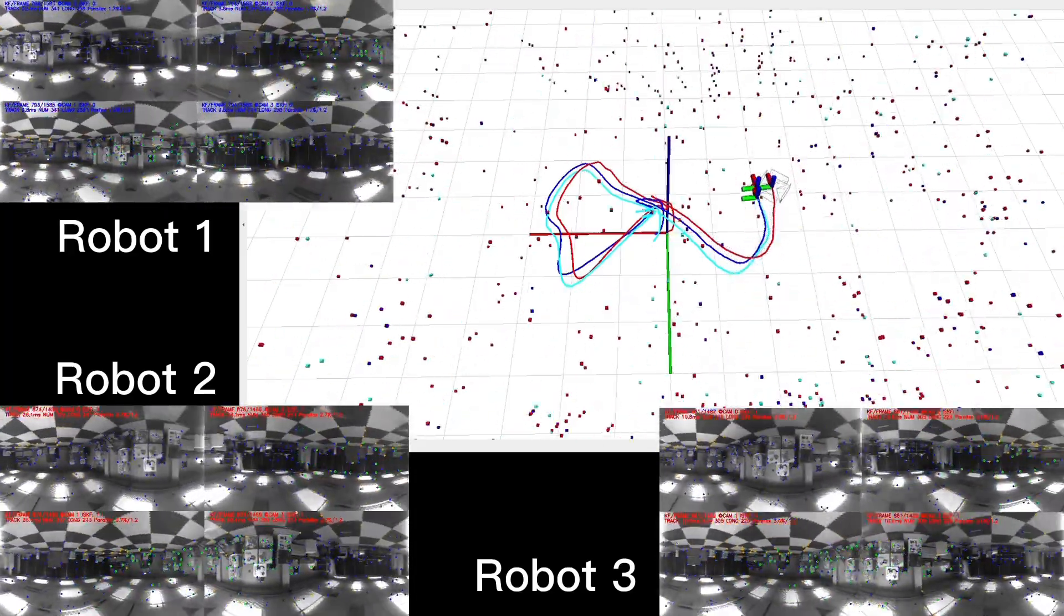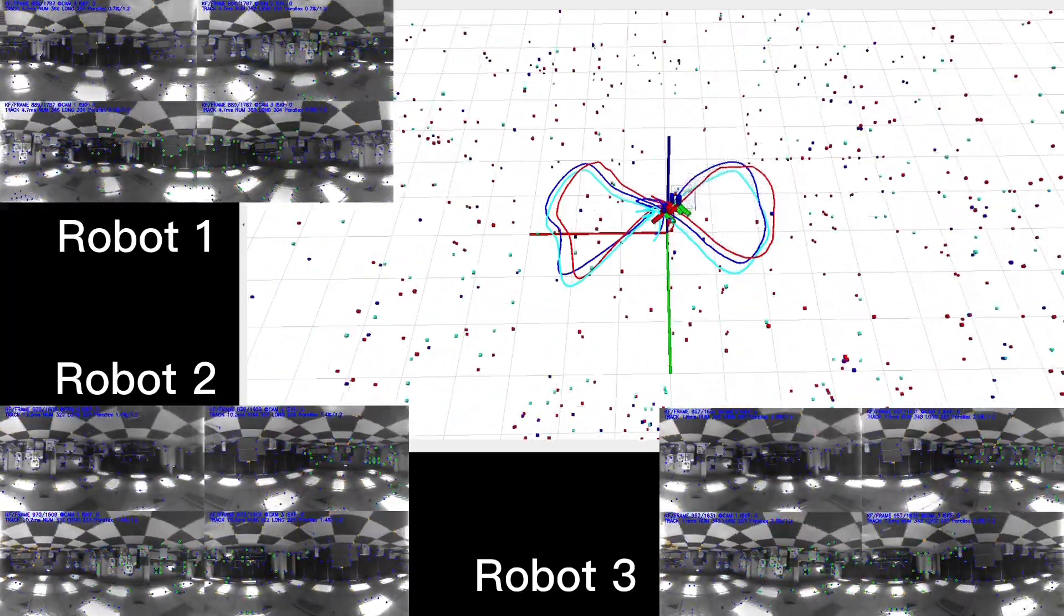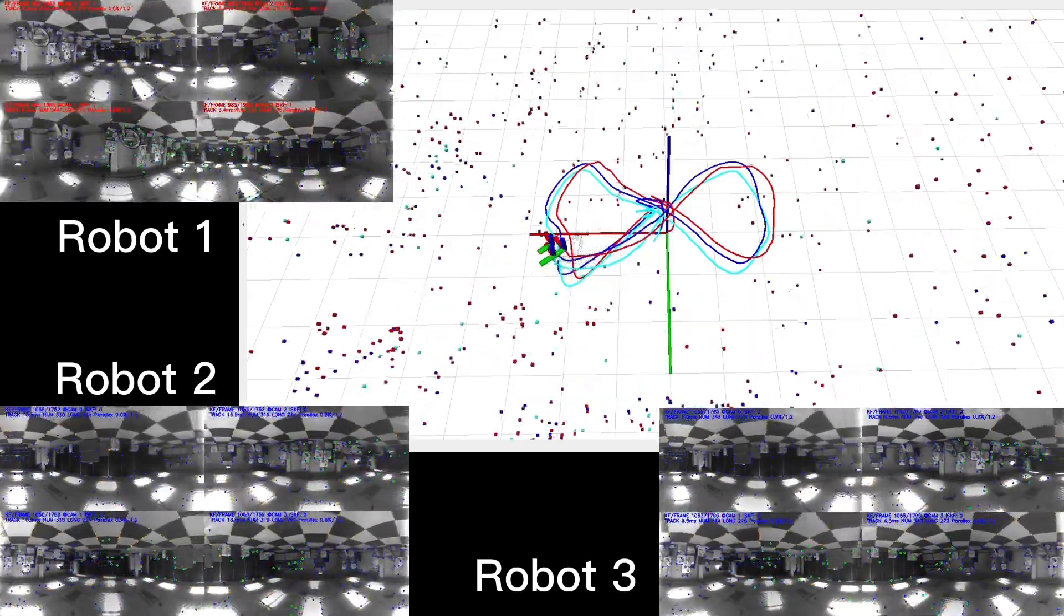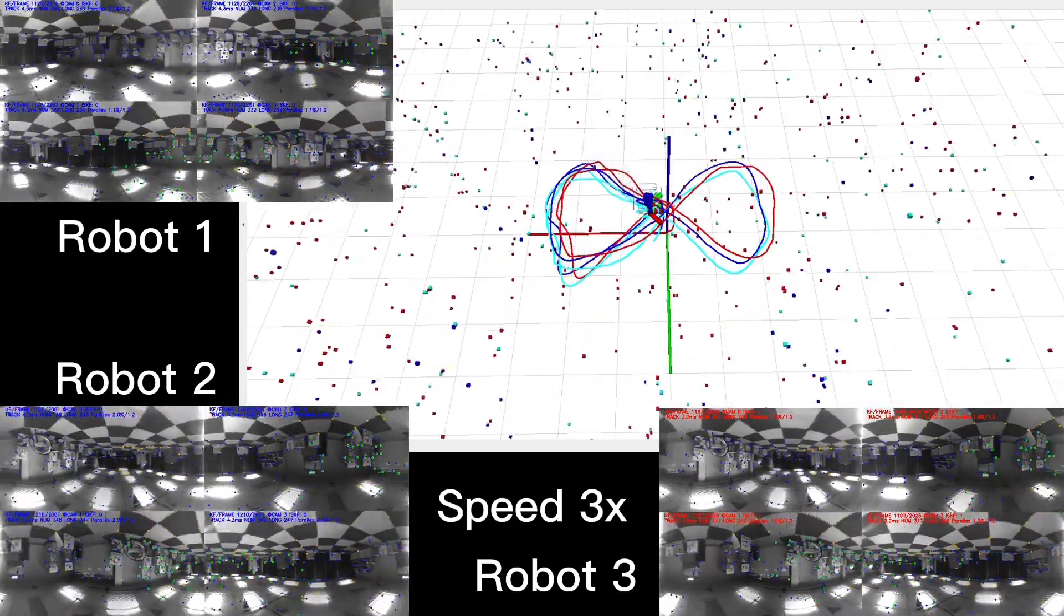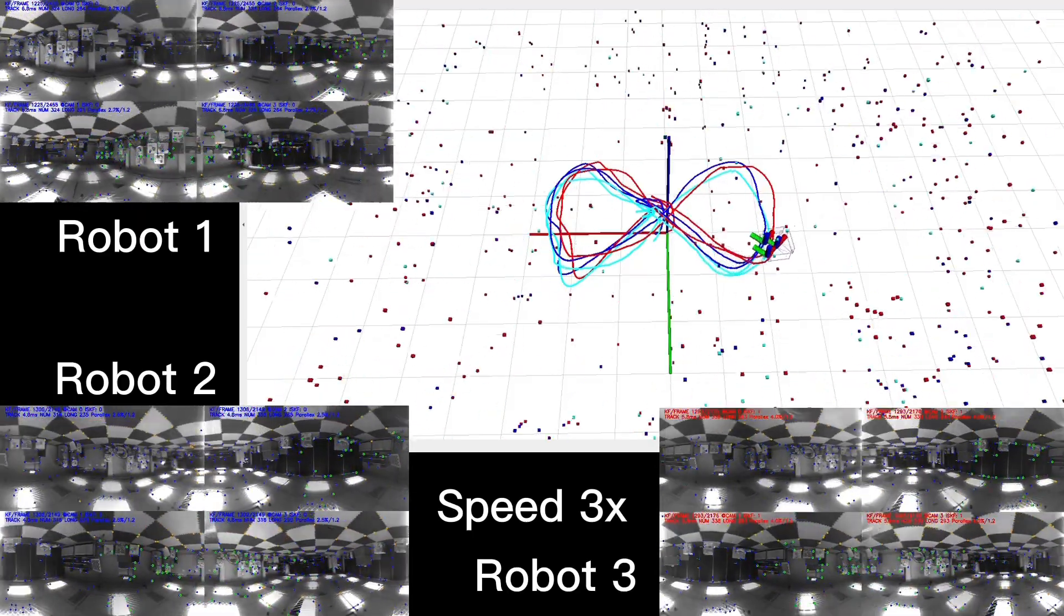In the tests, D-Square VINS accurately estimated the relative and local states. For more detailed test results of D-Square VINS, we encourage you to refer to our paper.